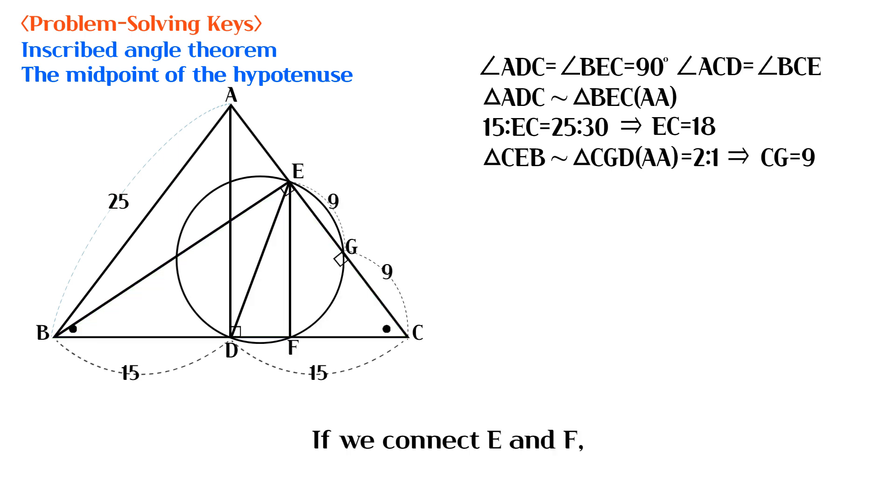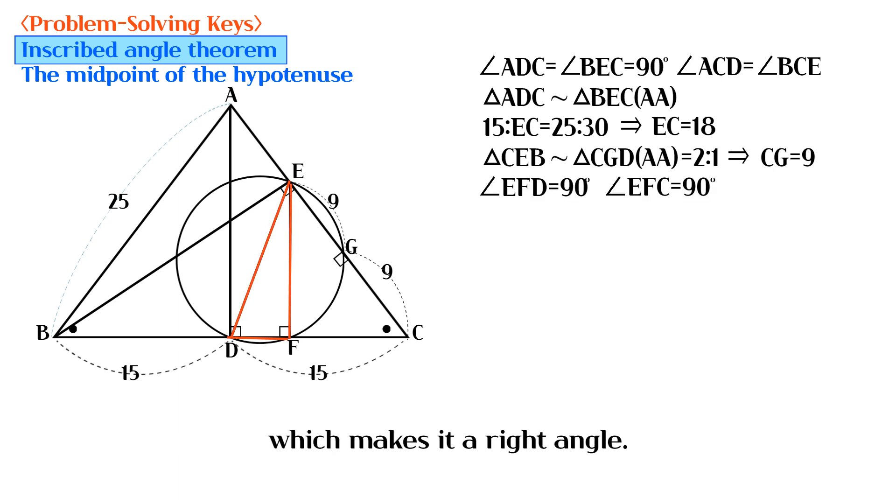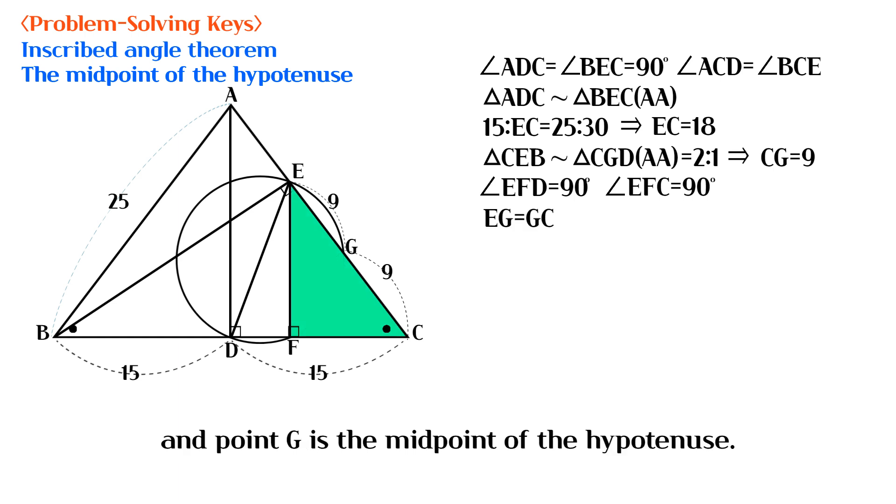If we connect E and F, then angle EFD is an inscribed angle of diameter DE, which makes it a right angle. Triangle EFD is a right triangle, and point G is the midpoint of the hypotenuse.